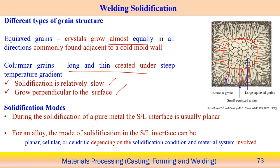During solidification, pure metal is associated with the solid-liquid interface moving as a planar interface. But for an alloy, it is hard to find a planar interface. In that case, solidification at the solid-liquid interface can be a planar interface, a cellular interface, or a dendritic interface, depending upon the solidification conditions and the kind of material where we are performing the welding or casting process.